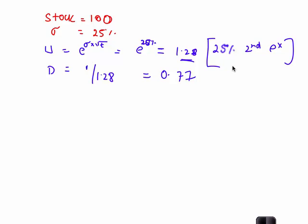So once we have U and D, the next step in the process, additional data here is risk-free rate of return 10%. So we have to calculate a risk-neutral probability.